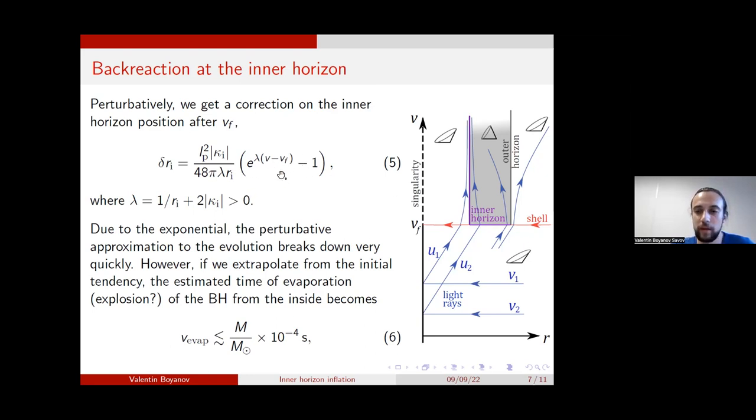Now, this is all based on a perturbative analysis in the vicinity of the inner horizon and the initial point of its formation, and it breaks down quickly after, due to this exponential behavior, after the formation of the black hole. But if we extrapolate from the initial tendency, then it looks like the inner horizon would move outward very quickly and would meet the outer horizon in a timescale which indeed is linear in the mass and it's of the order of 10 to the minus 4 seconds for solar mass objects.